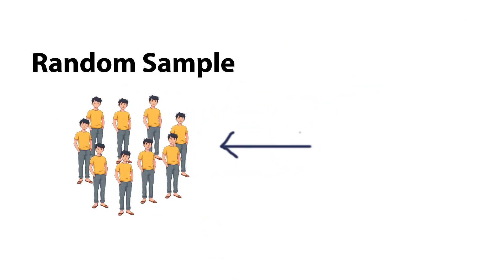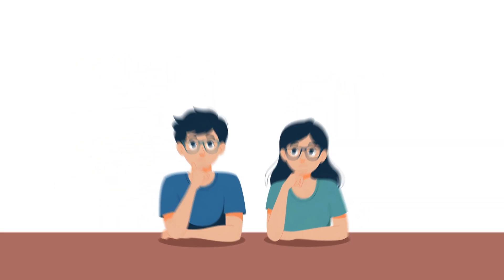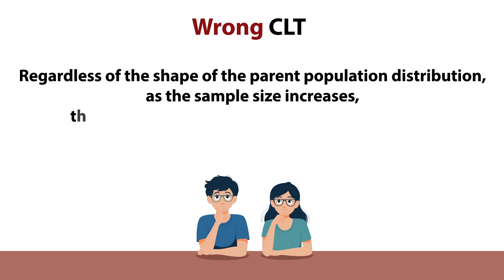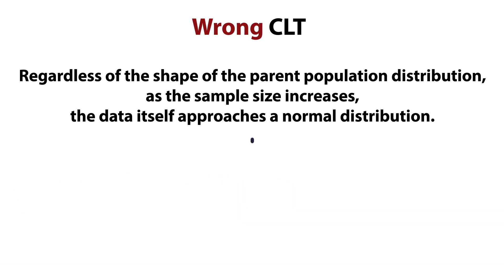Now, as we have a random sample, let's see how the central limit theorem connects with it. In my undergrad, the most common misunderstanding about CLT was the following. Regardless of the shape of the parent population distribution, as the sample size increases, the data itself approaches a normal distribution. That's not true.